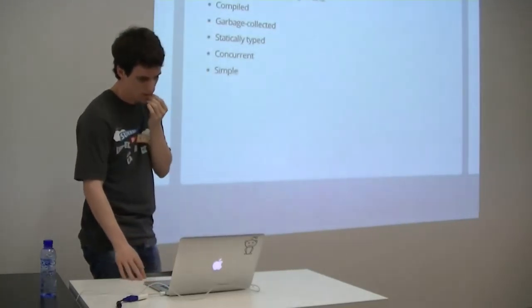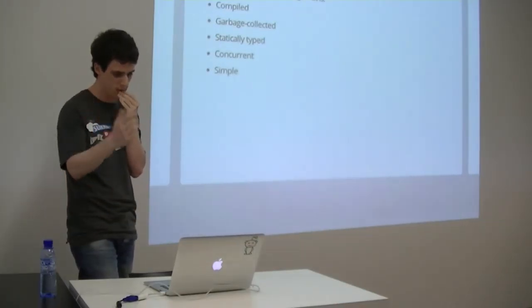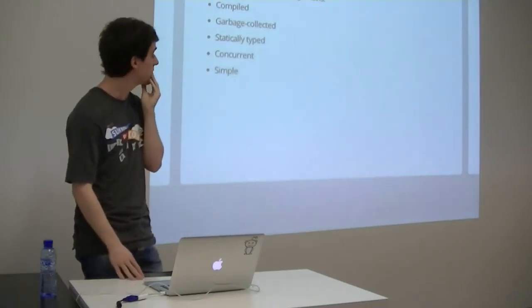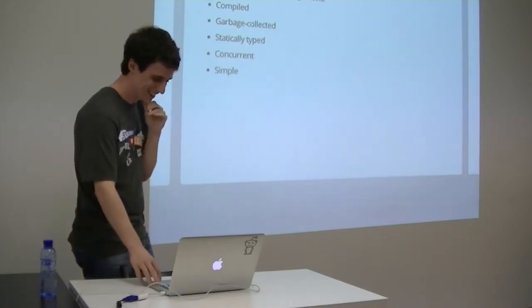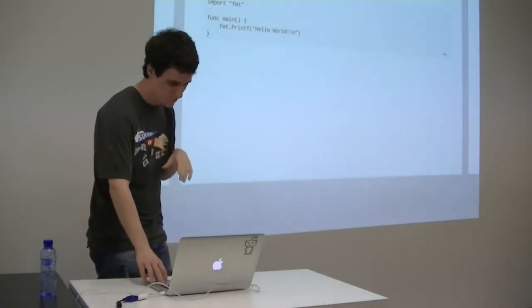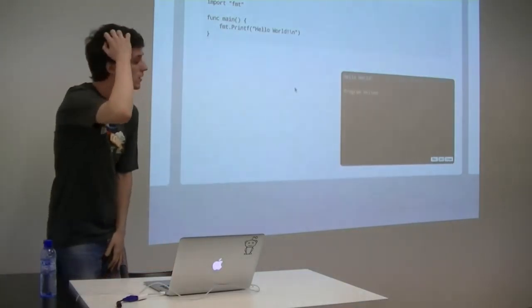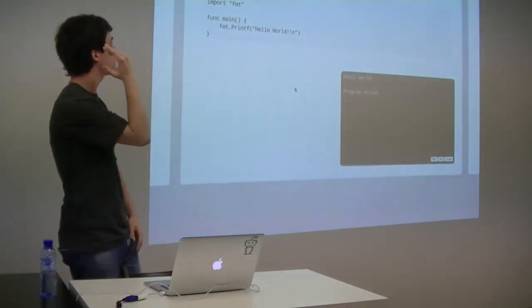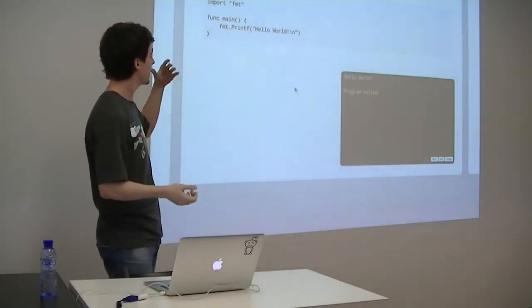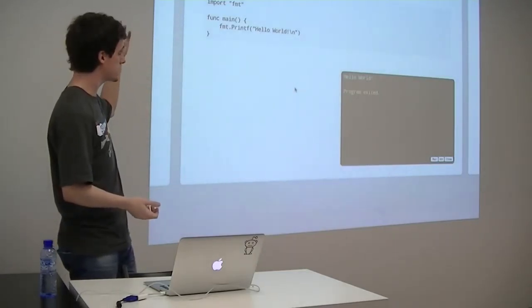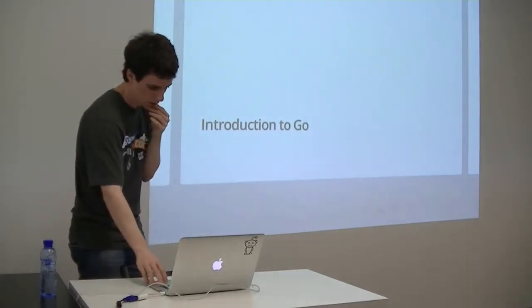The language has some key properties: it's compiled, garbage collected (so it has a runtime), statically typed, concurrent, simple, and lightweight. The mandatory Hello World looks like this: you write the package clause, import things, and the main function prints Hello World. No semicolons — it's not like JavaScript inserting them. The end of line is the statement terminator.